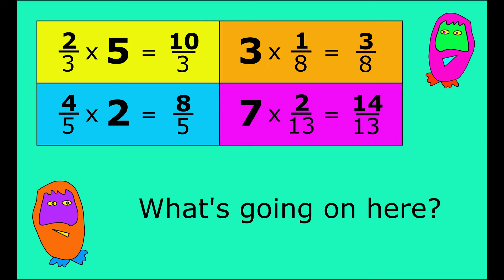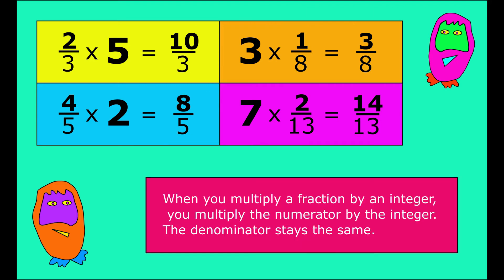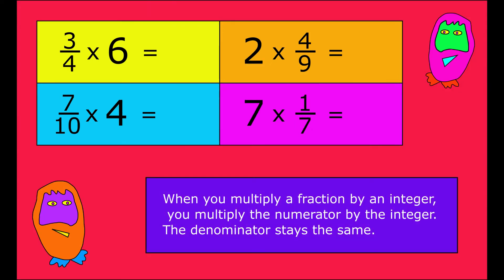What's going on here? Well, if you look closely, when you multiply a fraction by an integer, you multiply the numerator by the integer and the denominator just stays the same.